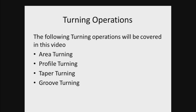Area turning is when large material removal has to take place to obtain the required contour. So here, instead of directly cutting along the final profile, the material is removed by taking several cuts and a profile close to the required is obtained. This operation is similar to rough machining.